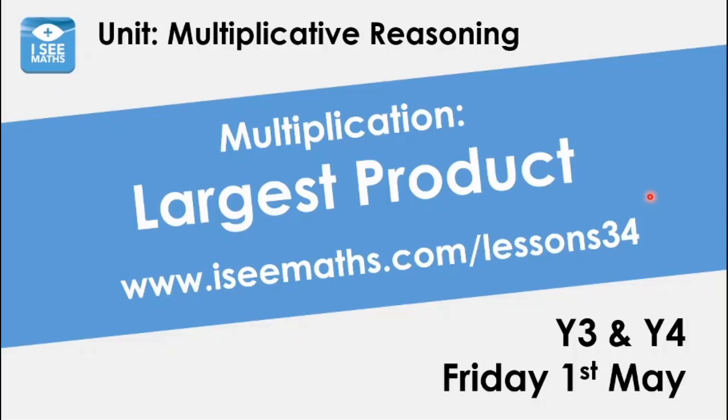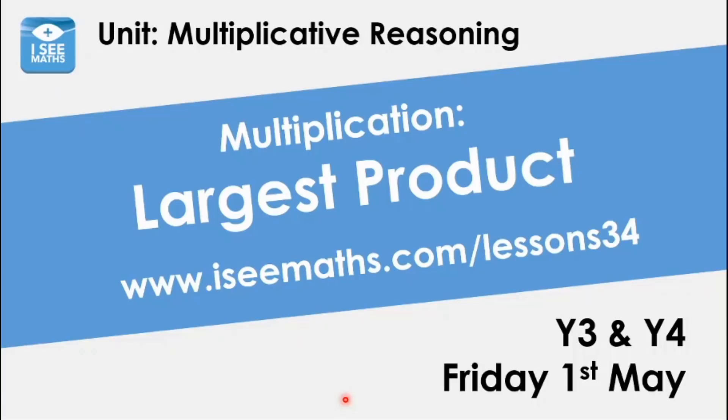Well, today we've got a little investigation we're going to start with. We'll start today, we'll continue on Monday. I love it. It's called Largest Product. The product is the answer when two numbers are multiplied together. So we're looking for the largest product today. We're going to start with this little investigation. I want you either to try the example on the left or to try the example on the right. So you're either going to choose two numbers that add to make ten, or you're going to choose two numbers that add to make sixteen. I want you to think of different possible numbers that it could be. Think of different combinations of numbers that add to make your number. Pause the video and have a go at that.